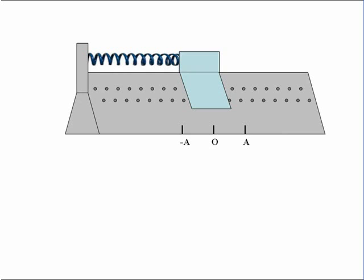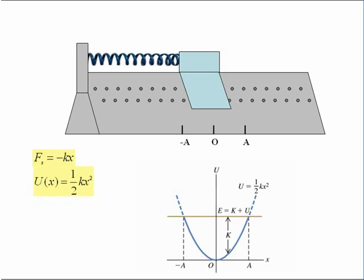When the glider is moving to the right, the spring exerts a restoring force to the left, fx which is equal to minus kx on the glider. The potential energy function for the system we know is U(x) is equal to a half kx squared.